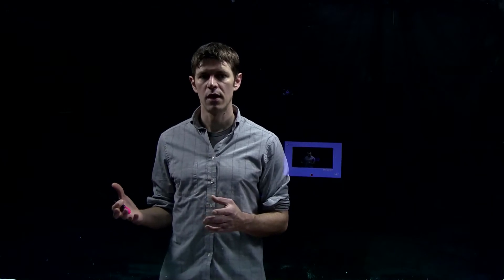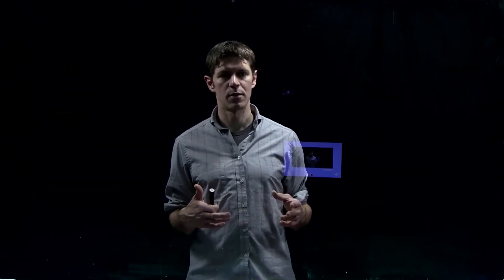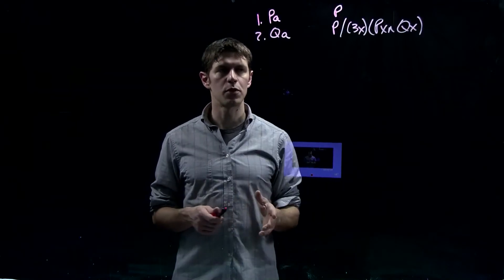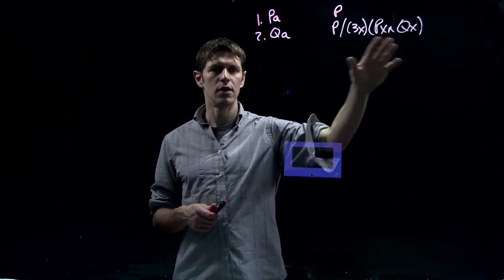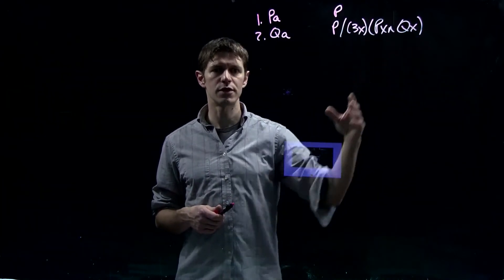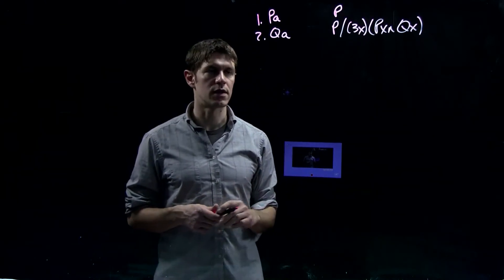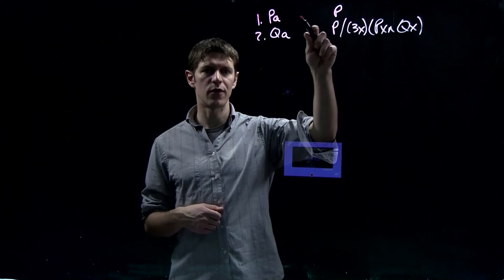Let's start by setting up the proof. The setup involves writing the formulas to the left of the turnstile and then working through the proof to derive the conclusion. So let's set up the first proof by writing out the premises — the formulas that we're going to reason from. The goal is to reason from PA and QA to the conclusion.